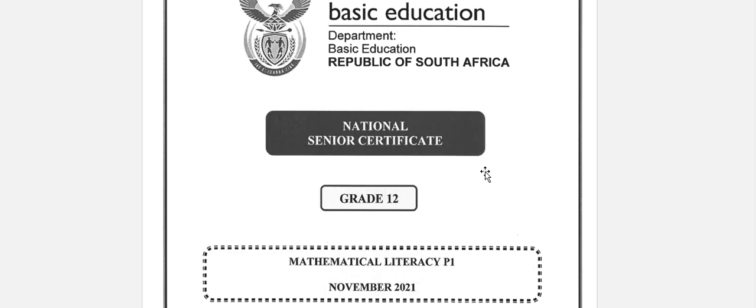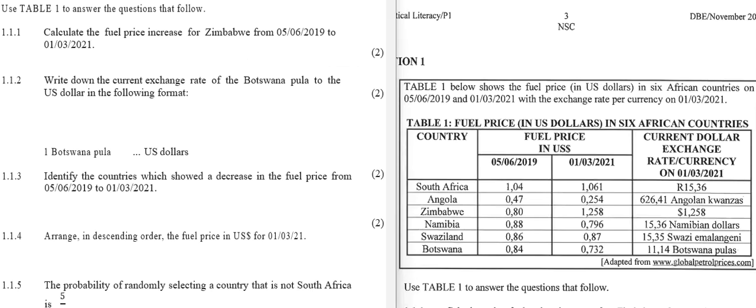This is the Math Lit paper one for November 2021. Let's go to question one. The information is given on the right, questions to your left, and I will trust that you will go through the information in your own question paper at your own time.